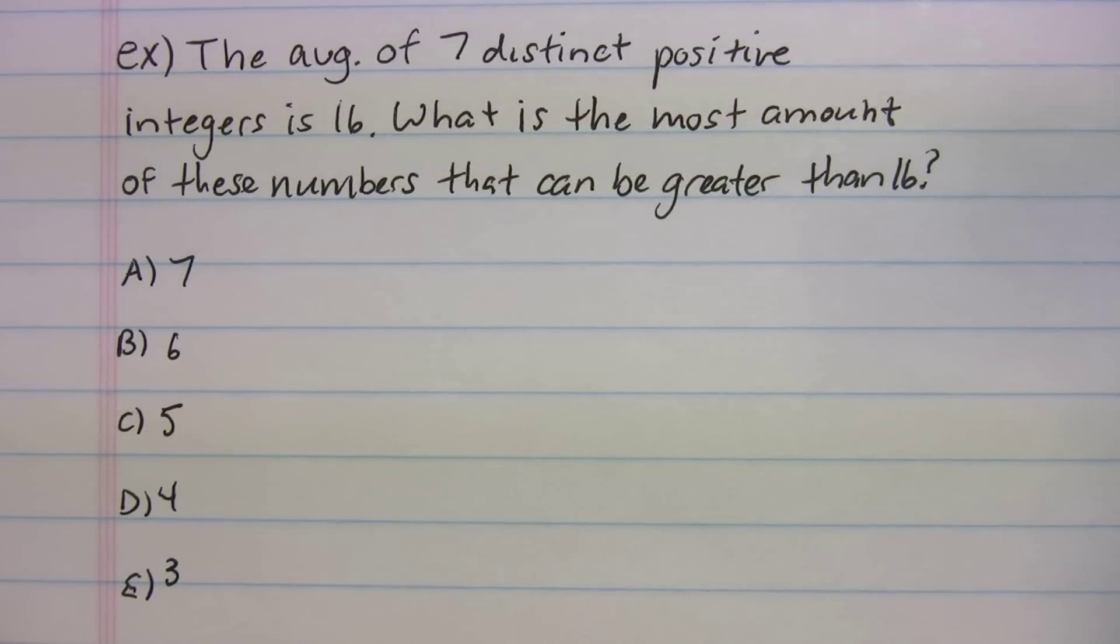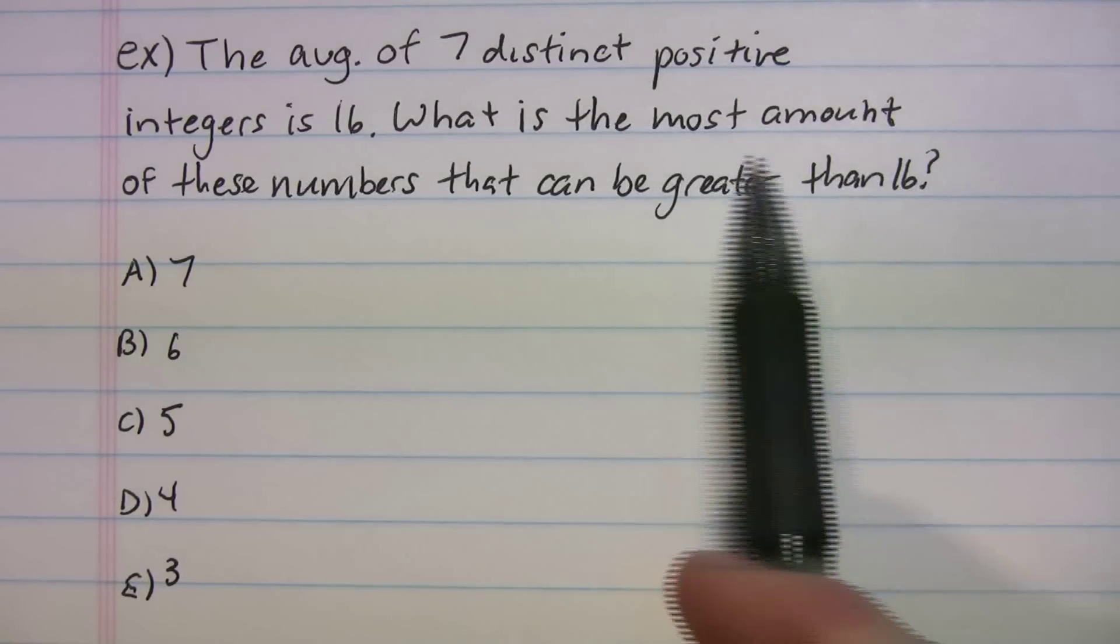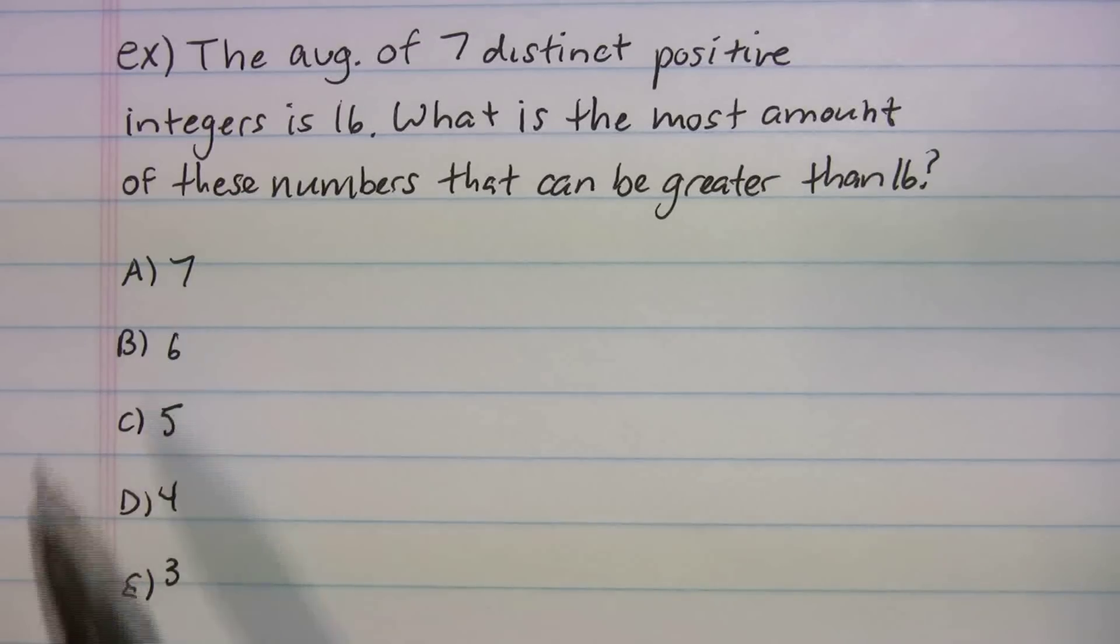It says, the average of seven distinct positive integers is 16. What is the most amount of these numbers that can be greater than 16? When we look at these numbers, it says what is the most amount. We want to start at the biggest number, right? So let's start at seven.